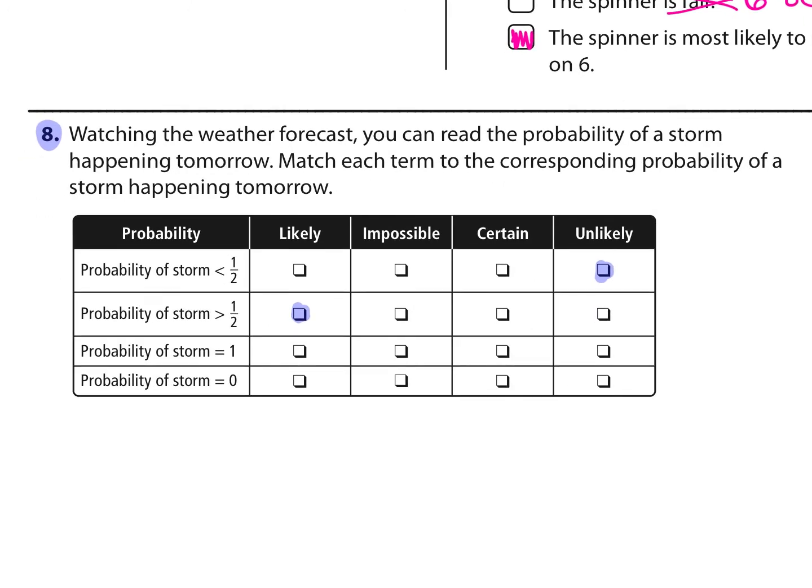The next one says the probability of the storm is equal to 1. That means it is certain. It will happen. And then if the probability is 0, that means it will not happen. It is impossible.